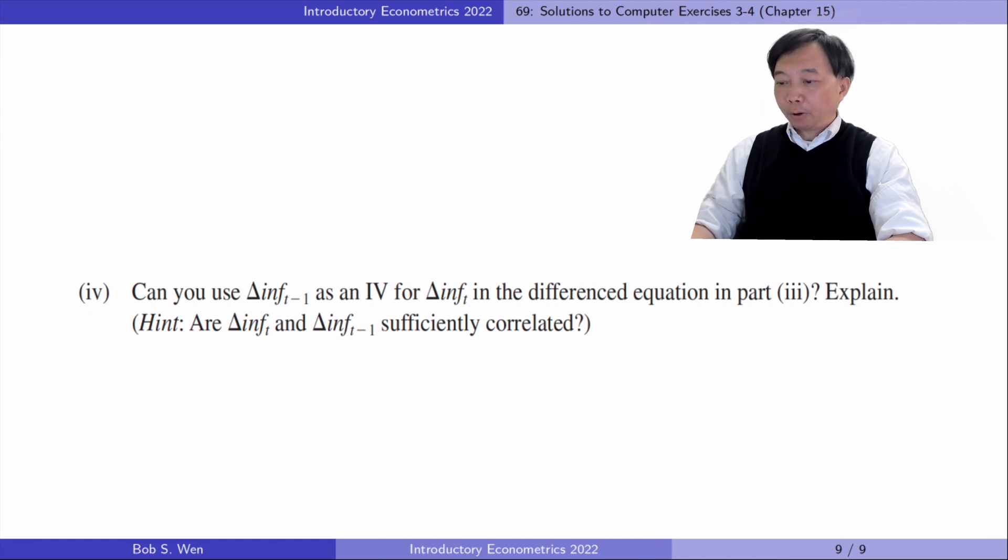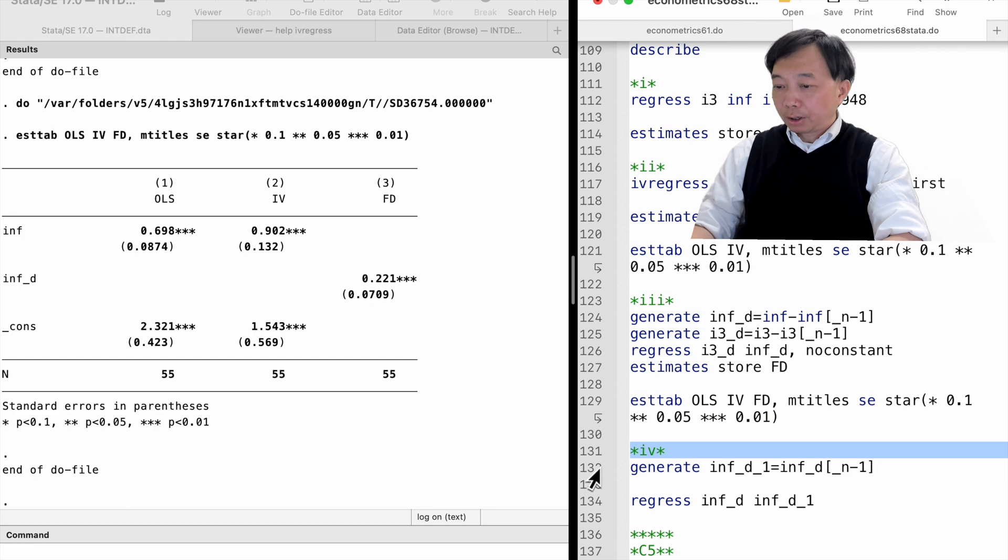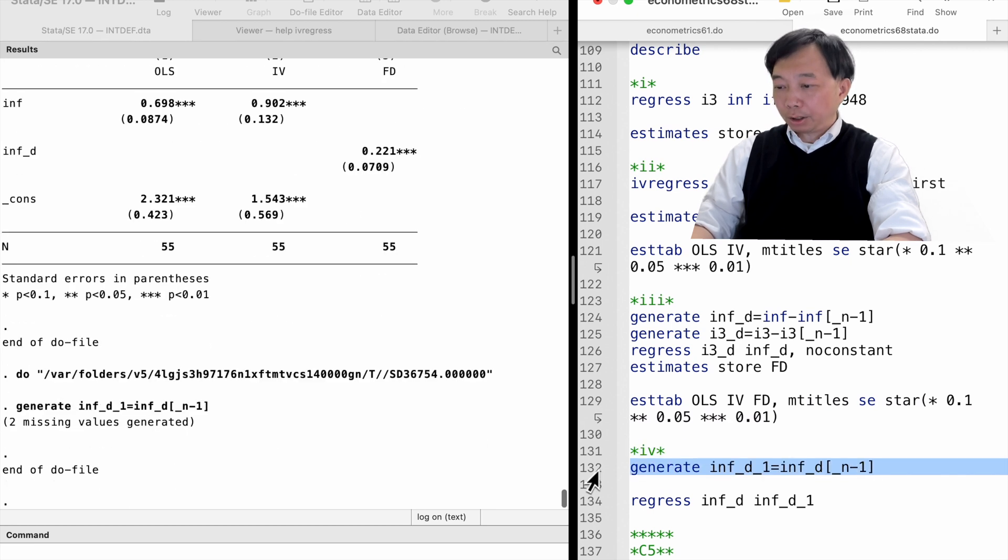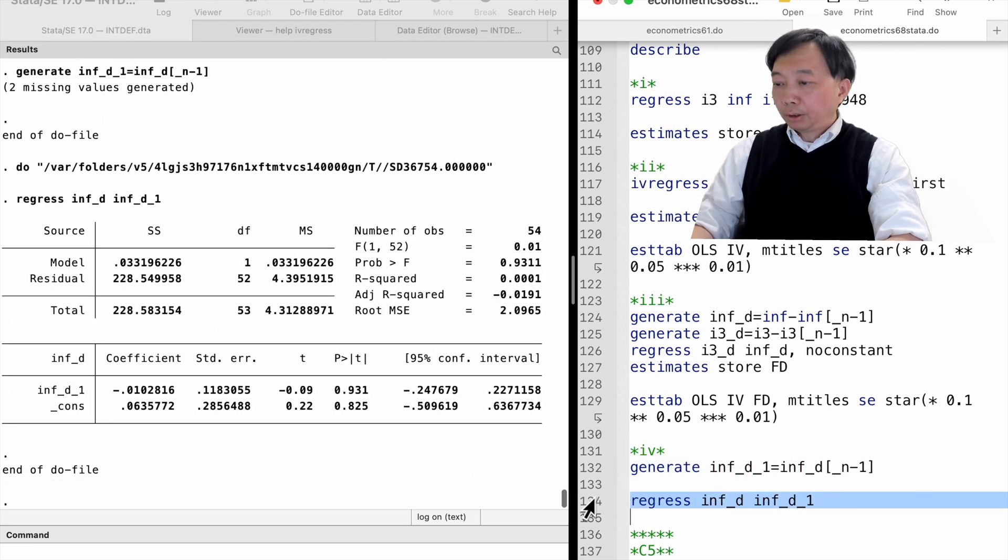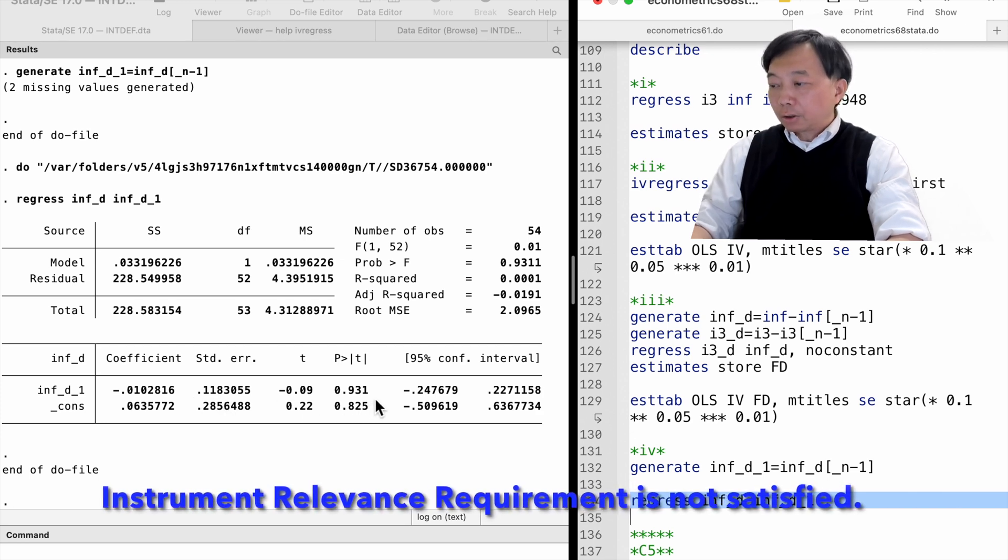In part four, can you use delta inflation rate in t minus one as an IV for delta inflation rate in t in the differenced equation in part three? No, because the regression shows that they are not correlated.